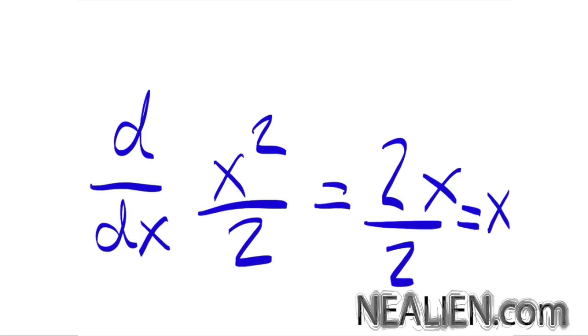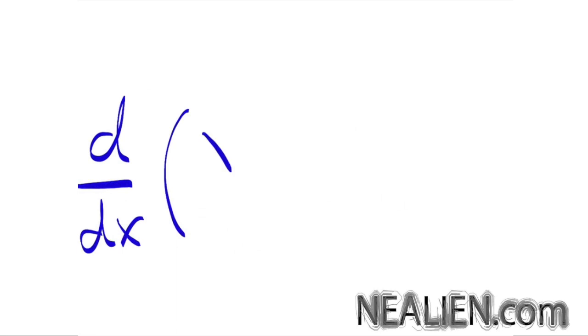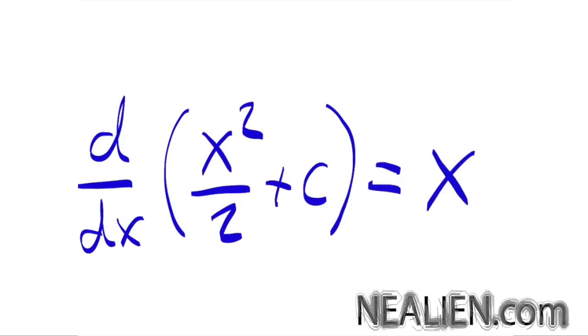So the antiderivative of x squared over 2 plus a constant, because the derivative of a constant is 0 so we want to throw that in there. The constant can be 0 itself but it could also be any other number. So the antiderivative of x is x squared over 2 plus c.